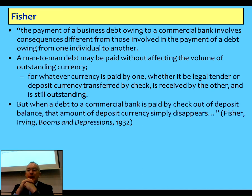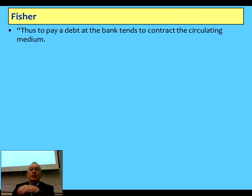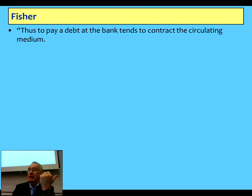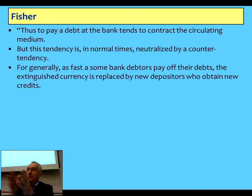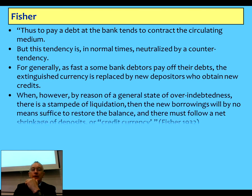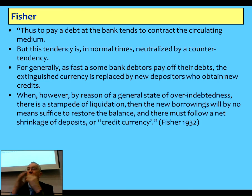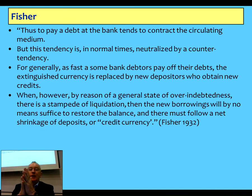But when a debt to a commercial bank is paid, that amount of deposit currency simply disappears. You take money out of your deposit account, you pay your loan down, the amount of money declines. Fisher says you contract the amount of money in circulation by paying back a debt. Normally that's neutralised by the counter-tendency of people taking out new debt at the same time as you're repaying yours. But when there's a general state of over-indebtedness — a concept that doesn't make sense in neoclassical theory but does in the endogenous money perspective — the new borrowings will be by no means sufficient to restore the balance, and there'll be a shrinkage of the money in circulation.